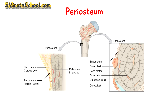The outer fibrous layer consists of fibroblasts which make fibrin, and we also have within the fibrous layer collagen, elastin, nerves, and a microvascular network. The purpose of this layer is to provide mechanical stability for the periosteum.